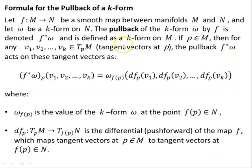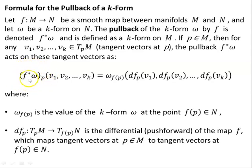Let's look at some definitions. The pullback of the K-form: let F be a smooth map between manifolds M and N, and let omega be a K-form on N. The pullback of the K-form omega by F is denoted F upper asterisk omega and is defined to be a K-form on M. If P belongs to M, then for any tangent vectors V1, V2, ..., VK that belong to the tangent space of the manifold M at the point P, the pullback F upper asterisk of omega acts on these tangent vectors. The pullback of omega acting on these vectors is the same as the K-form on N acting on these push-forward vectors.